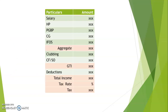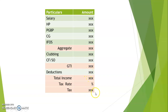Let's look at a table — the same flow we saw previously. Five heads, aggregate income, then clubbing and carry forward gives gross total income. Minus deductions gives total income. Apply tax rate and get the tax. So: add all five heads to get the aggregate; add or minus adjustments to get the gross total income; minus deductions to get total income; apply the tax rate; get the tax. That is the general flow for calculating tax.